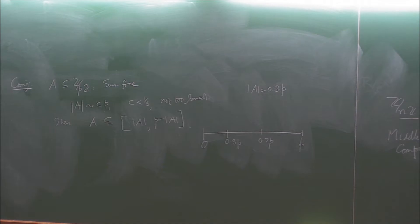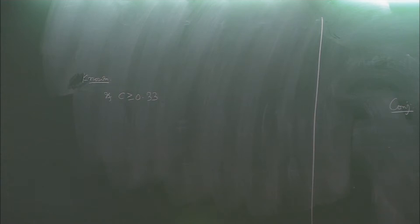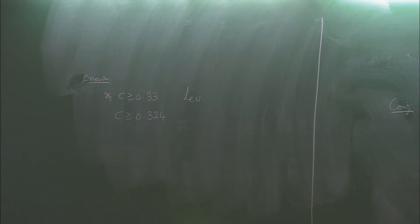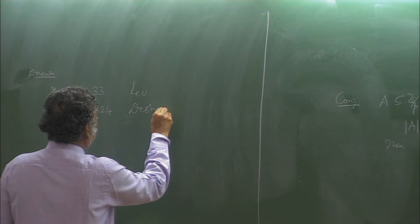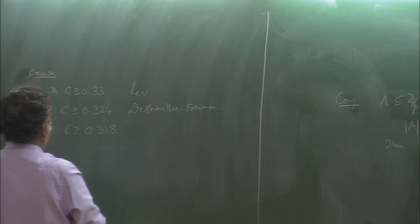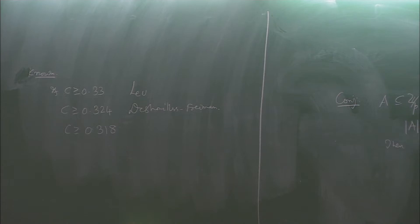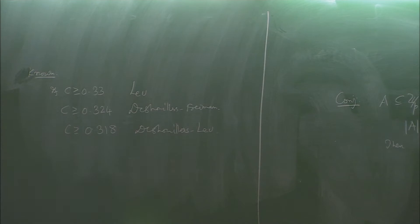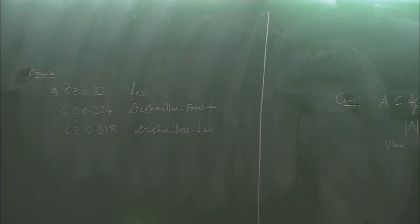What is known: if c ≥ 0.33, this is true, and that is due to Lev. If c ≥ 0.324, and if c ≥ 0.318, that is due to this work and Lev. We seem to be going in an arithmetic progression of steps of size 0.006.